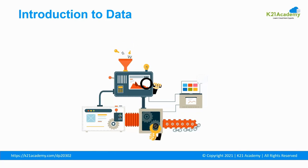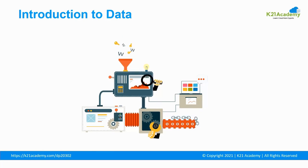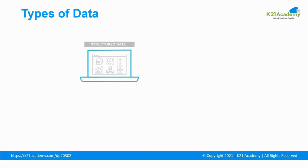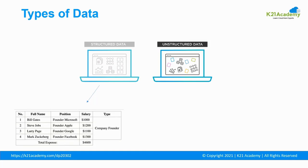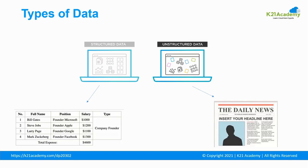In simple terms, data is a set of information — it could be a product price, its name, etc. In another definition, data is information that has been translated into a form efficient for movement or processing. There are two types of data: structured data, which has a schema and is organized in rows and columns, and unstructured data, which has no schema or structure and could be in the form of news, emails, and bulk information.